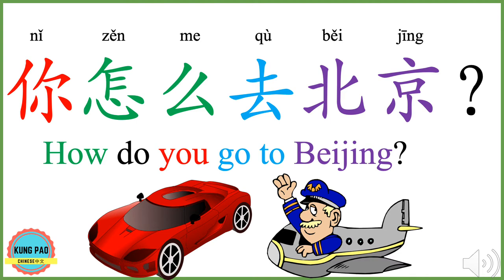你怎么去北京? 你 means you. 怎么 means how. 去 means go. 北京 means Beijing. 你怎么去北京 means how do you go to Beijing — for example, do you take a taxi or an airplane?